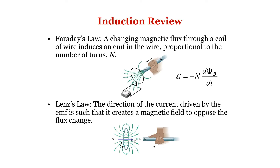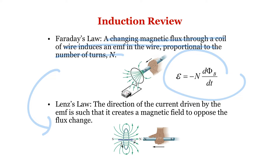Before we go into mutual induction, let's recall everything. We have Faraday's law: a changing magnetic flux through a wire induces an EMF in the wire proportional to the number of turns. In other words, a rate of change of magnetic flux induces an EMF. So when you have a changing magnetic flux, you are going to induce an EMF, which means you are going to induce a current. That's why we proceed with Lenz's law.